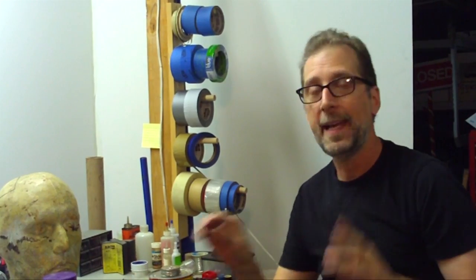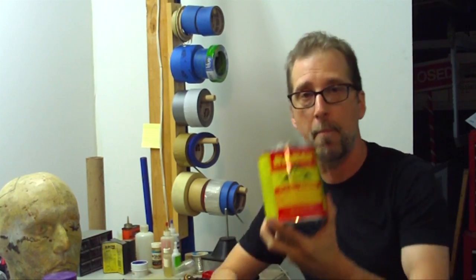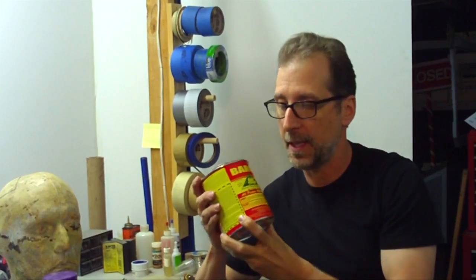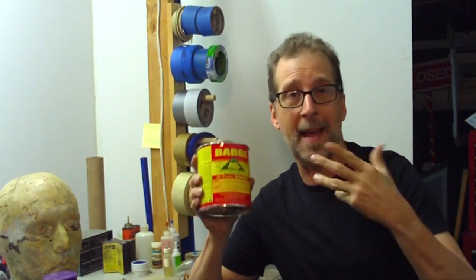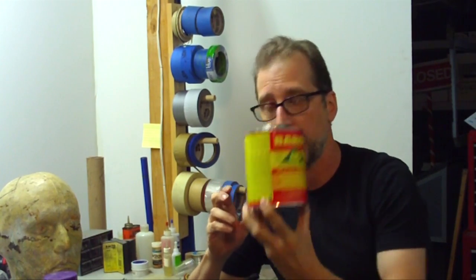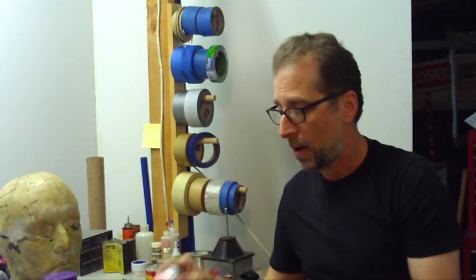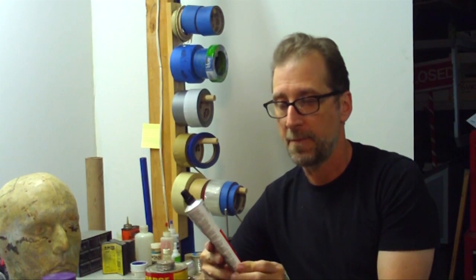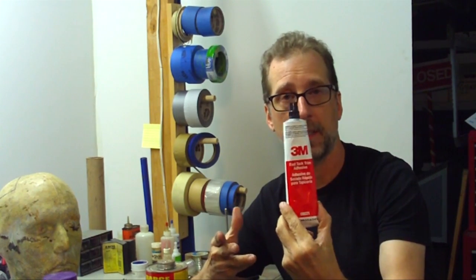And for adhesion, I like to use barge cement. Barge cement is usually sold at leather stores and shoe repair places. But if you cannot get barge cement anywhere in your area, go to any kind of hardware store and there's a 3M Fast-Tac trim adhesive. You can get this in pretty much any hardware store. It's basically the same thing, it's contact adhesive.